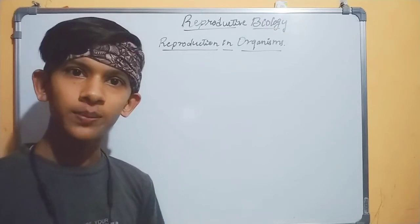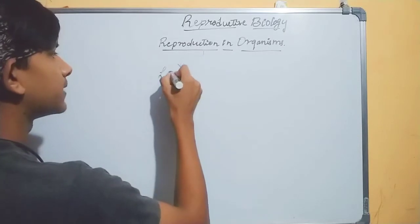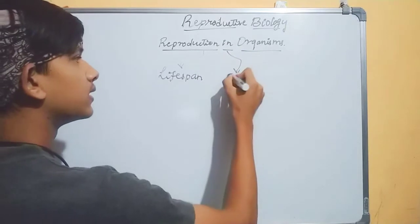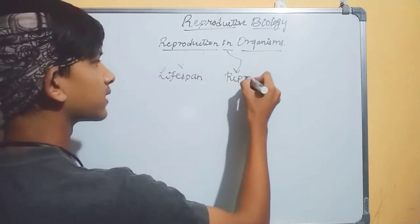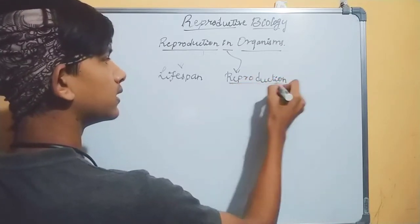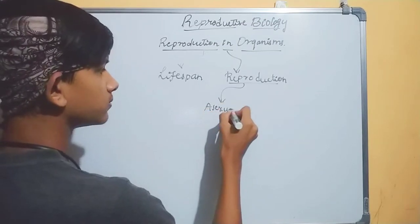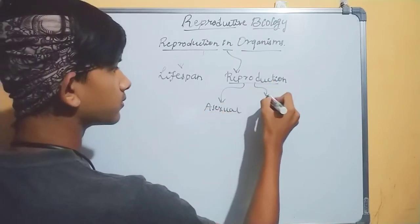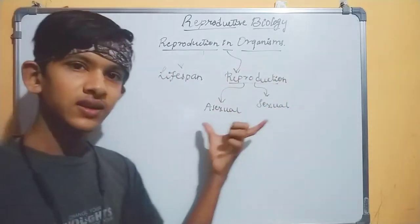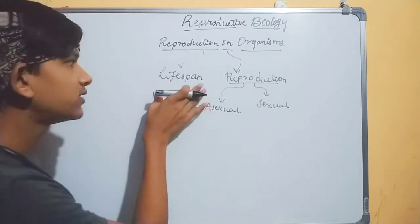First, we will discuss the topics. We will discuss life span, then reproduction, then asexual reproduction, and sexual reproduction. With this, the whole chapter will be over. Okay, without wasting any time, let's start with life span.